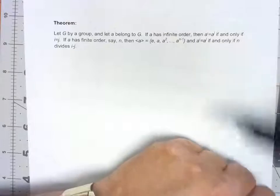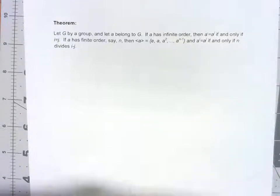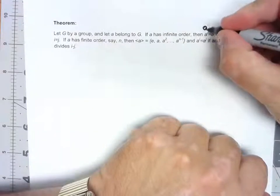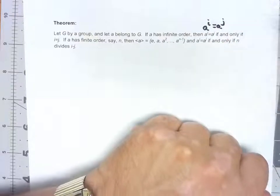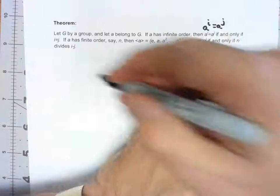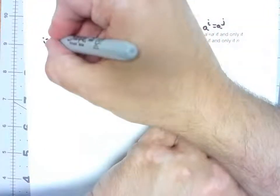First of all, if A has infinite order then A sub I equals A sub J if and only if I equals J.